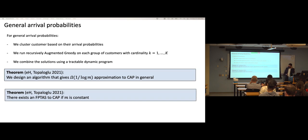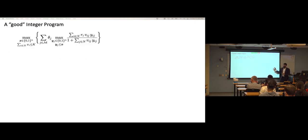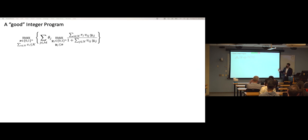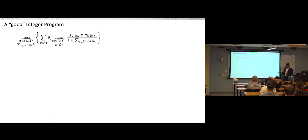For constant m we get an FPTAS — a fully polynomial time approximation scheme giving a 1+epsilon approximation. We also designed an IP formulation for CAP. The binary variable x_i indicates whether product i is carried; y_{ij} indicates what is offered to customer type j (a subset of x). The condition F_j(x) ≥ Delta can be linearized: since the optimal second-stage solution is revenue-ordered, the constraint reduces to a linear inequality involving (r_i - Delta)^+ * x_i.